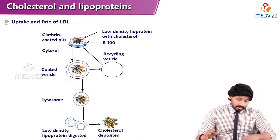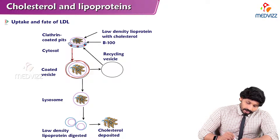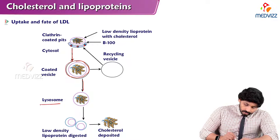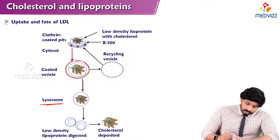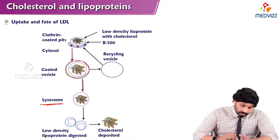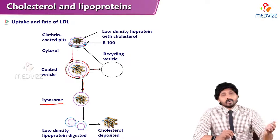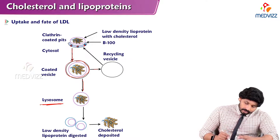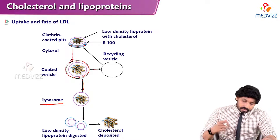Here is an overall diagrammatic representation: low density lipoprotein with cholesterol and ApoB100 encounters clathrin-coated pits in the target tissues. By the process of endocytosis, they go inside the cytosol as a clathrin-coated vesicle. When it reaches the lysosomes, lysosomal acid lipase and ACAT act to release free cholesterol inside the cell. The low density lipoprotein is then digested, and the clathrin-coated pit is recycled as a vesicle that returns to the surface to grab one more LDL. The cholesterol is deposited as cholesterol esters, and may be used for making steroid hormones, vitamin D, or cell membranes.